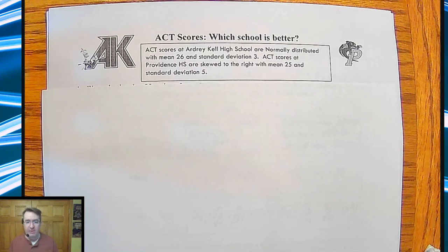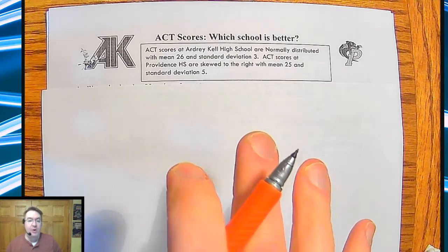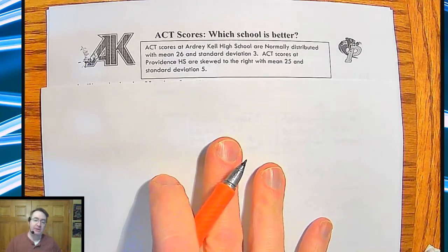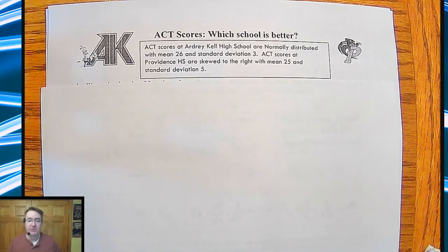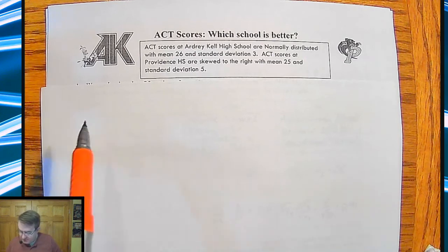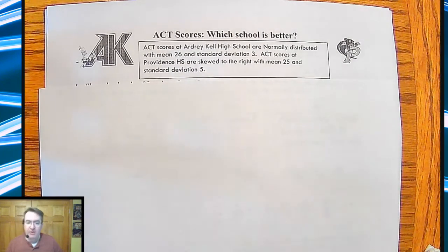Hey, we're back wrapping up Chapter 7 of Practice Statistics, 5th Edition for AP Stats. We are going to talk about difference of means today. So what we're going to do is compare the ACT scores of two high schools. Here's the situation: ACT scores at RV Cal High School are normally distributed with a mean of 26 and a standard deviation of 3, and ACT scores at Providence High School are skewed right with a mean of 25 and a standard deviation of 5.